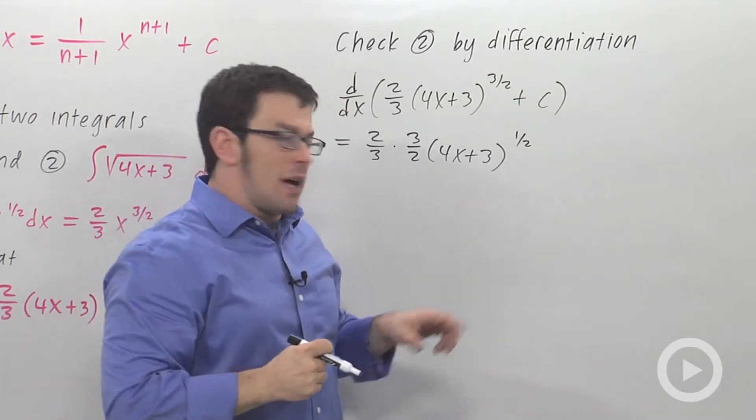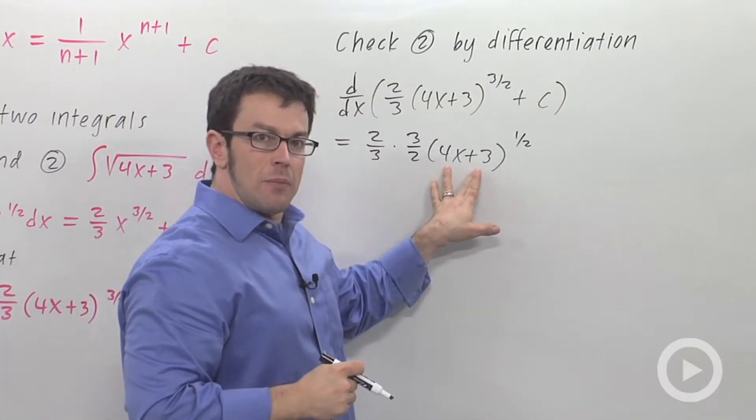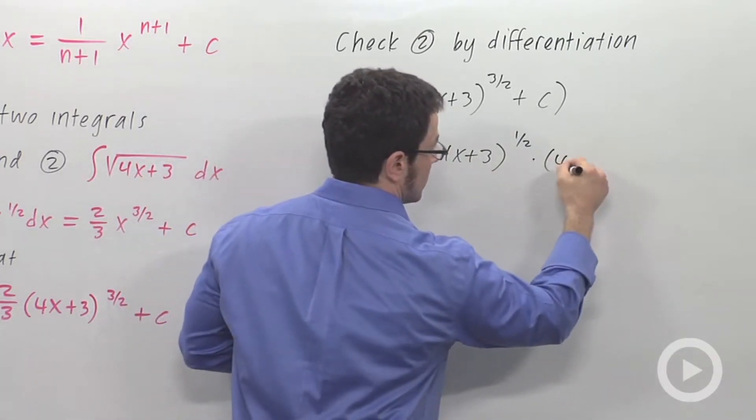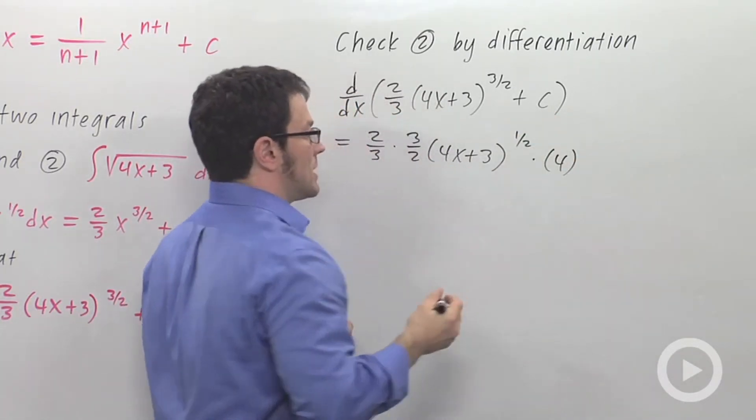But I still have to multiply by 4, the derivative of the inside part. I have to use the chain rule, and of course, the derivative of the plus c is 0.